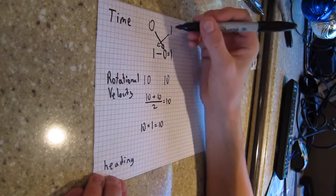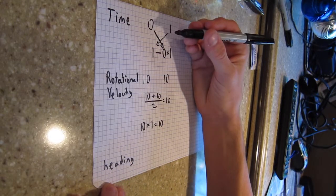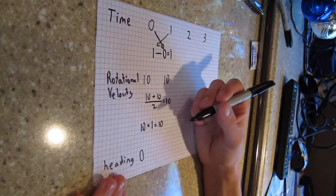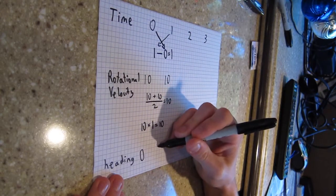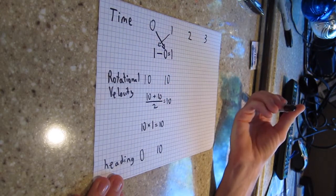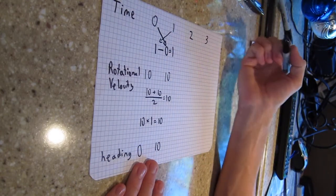So at the end of, oh, and I should say at the very beginning, we give ourselves a heading of 0, just as a reference point. So after 1 second, our heading is 10. Does that make sense? So now we'll do it again here, between 1 and 2.